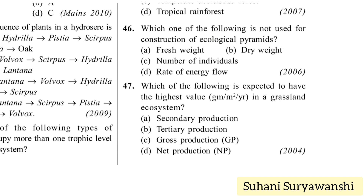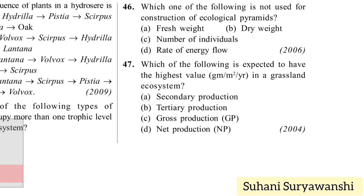Which one of the following is not used for construction of ecological pyramids? Options: fresh weight, dry weight, number of individuals, or rate of energy flow. We do not consider fresh weight for pyramids — we consider dry weight for biomass. So option A — fresh weight — is the answer.